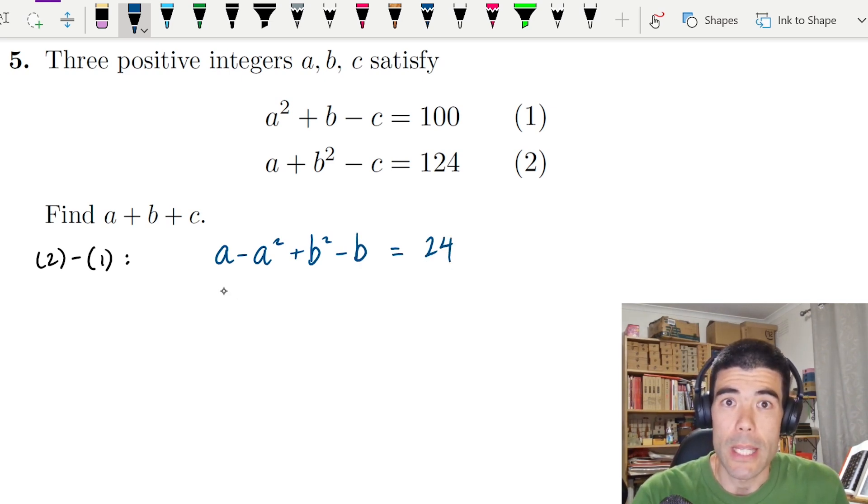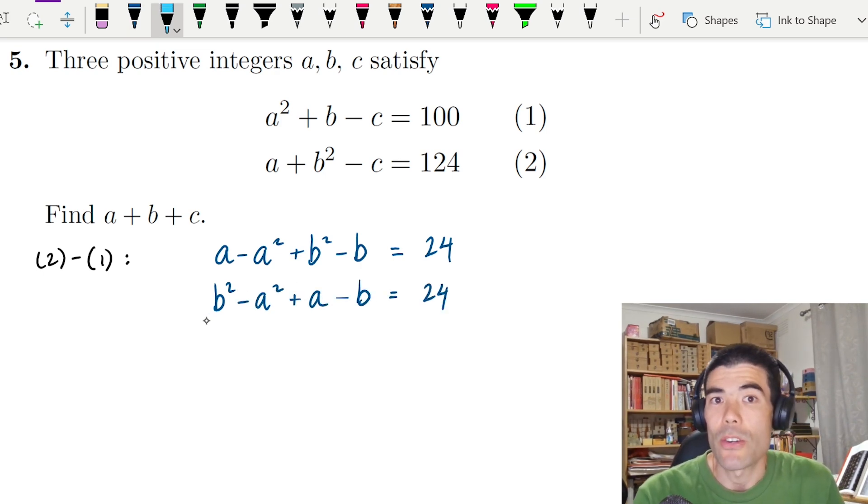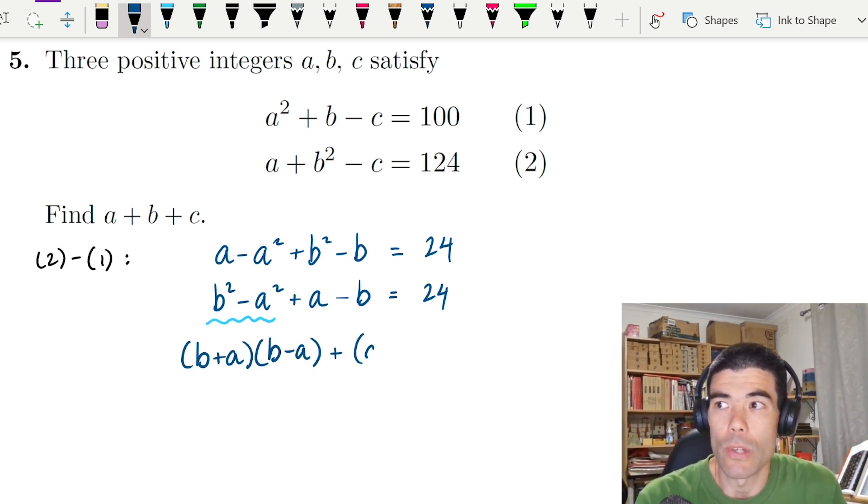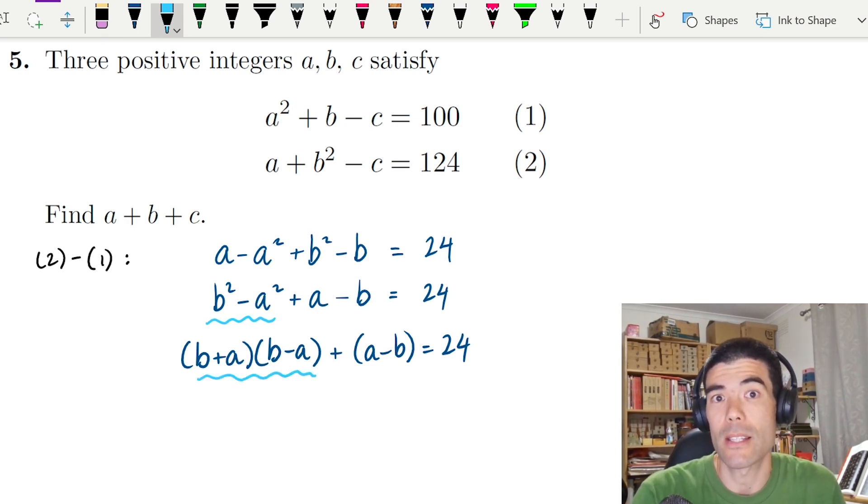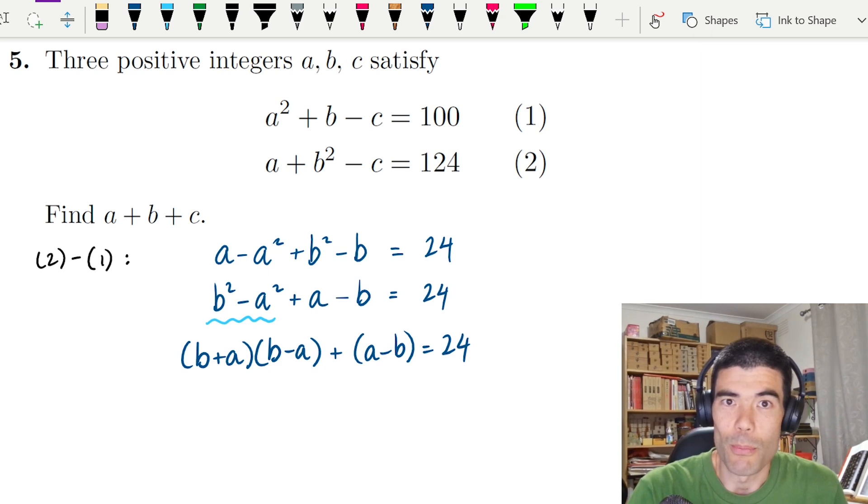In there, we have b squared minus a squared. I'm going to write that out front because when we see b squared minus a squared, we can factorize that into b plus a times b minus a. Factorization is a really good approach for something like this because our solutions have to be integers. If we can look for integer factors, then we can solve the problem.